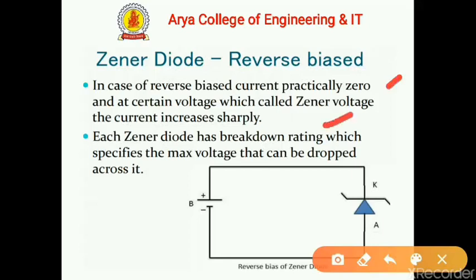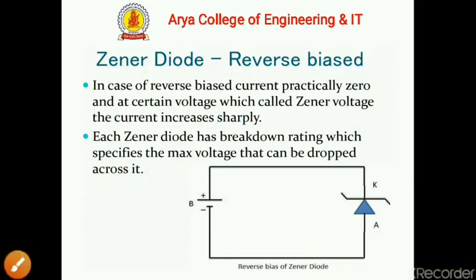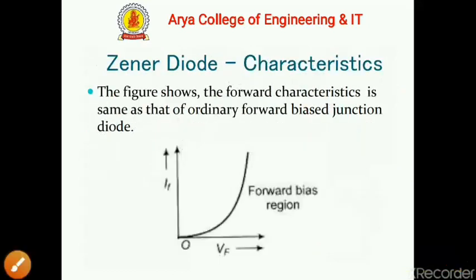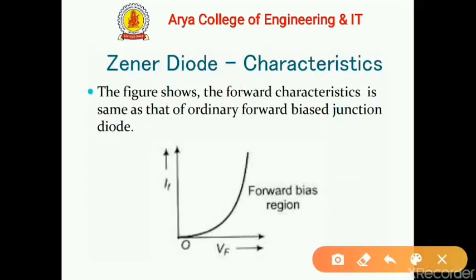Each Zener diode has a breakdown rating which specifies the maximum voltage that can be dropped across it. In the reverse bias circuit, the negative terminal is connected to the positive region and the positive terminal is connected to the negative region of the battery.